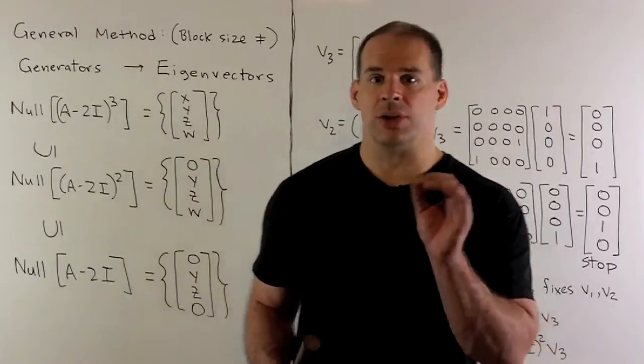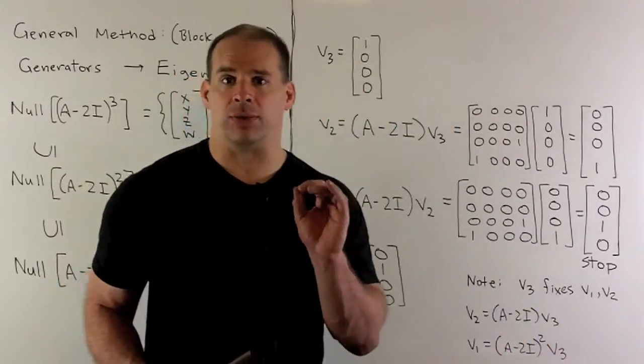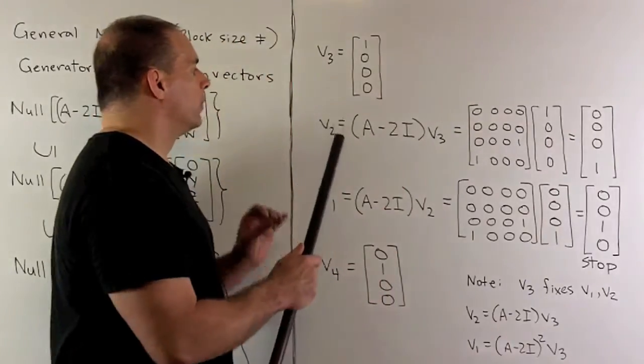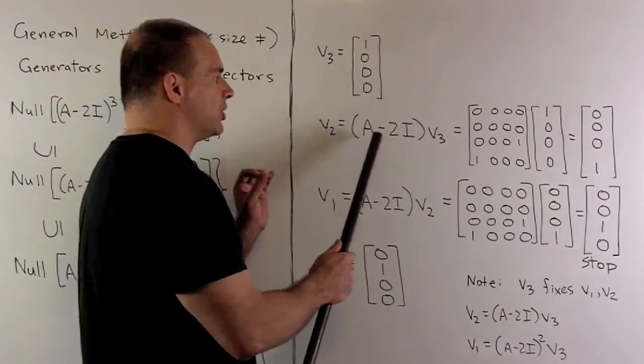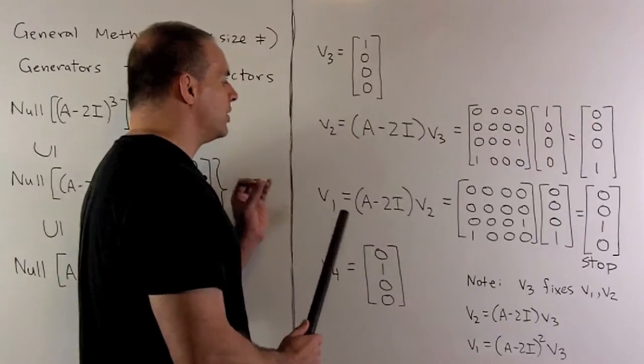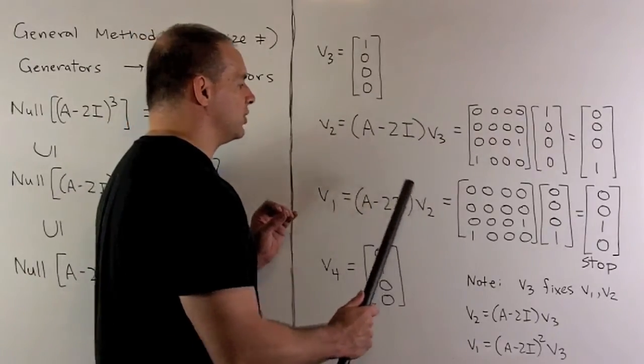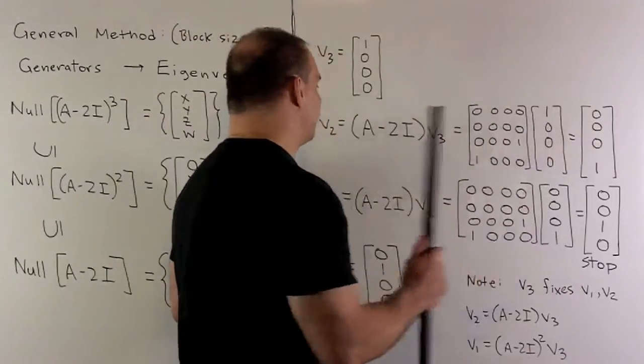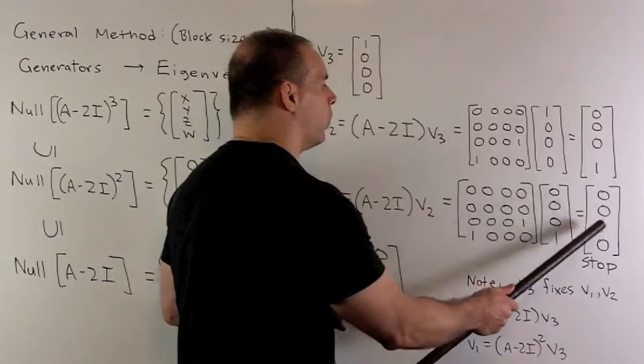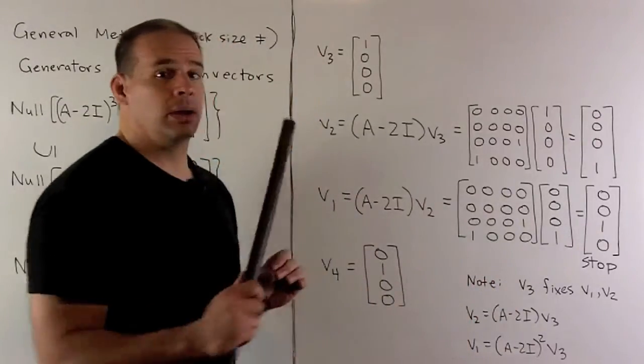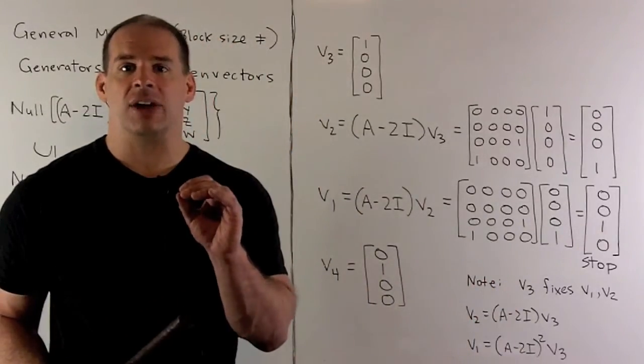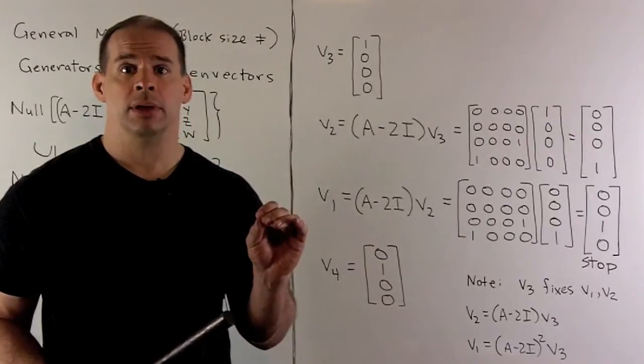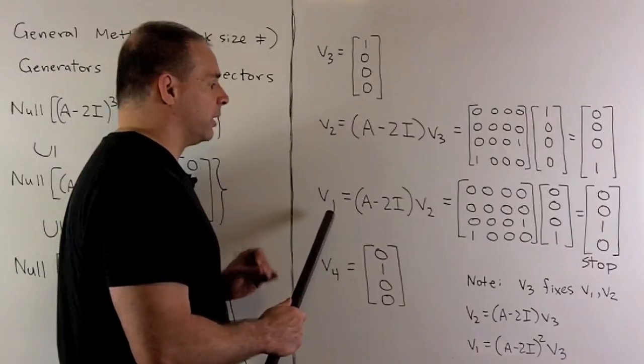[1,0,0,0] is going to be what we call V3 in our equations from the previous board. We'll have V2 equals A minus 2I times V3, V1 equals A minus 2I times V2. We work them out. I get [0,0,0,1] for V2, and [0,0,1,0] for V1. I note V1 is an eigenvector, so it's on our lowest level, so we stop there. This gives us the basis that goes with our three-by-three block.